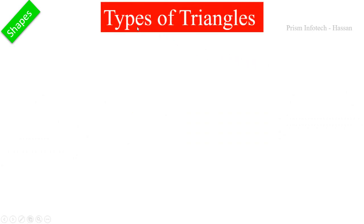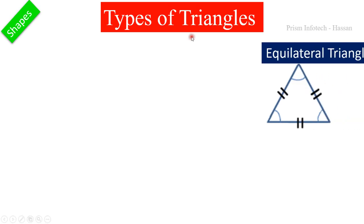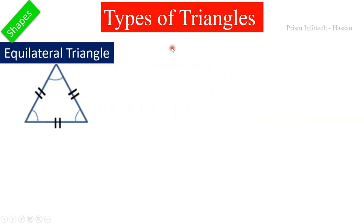First thing is types of triangles. A triangle is a shape that consists of three sides. Let us move on to types of triangles.